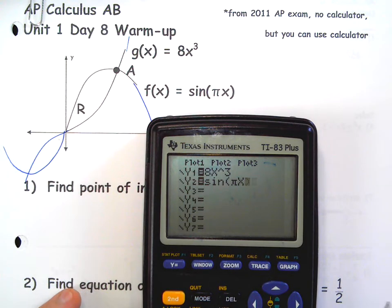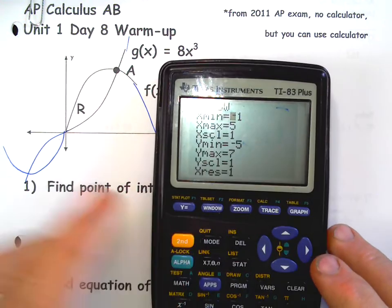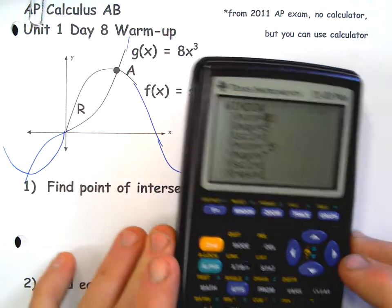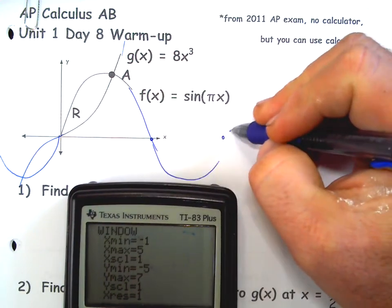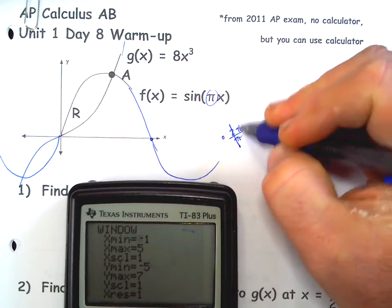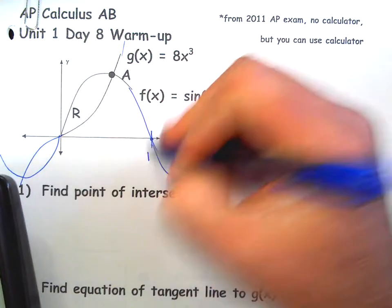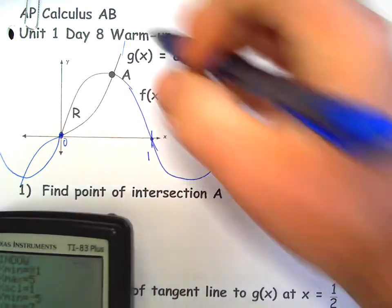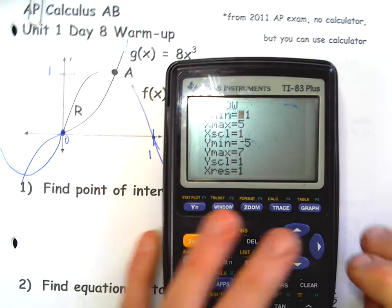We could make our window. Now we already have a rough idea of what the window is. The period of sine is usually two pi, but if there's a number inside multiplying the x you divide that by it, so the period is two. I'm pretty sure this is at one, this looks like it's at zero, and then the amplitude of sine is one so the height is like one.